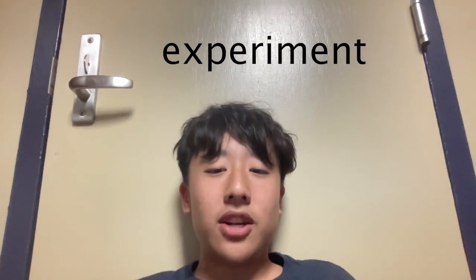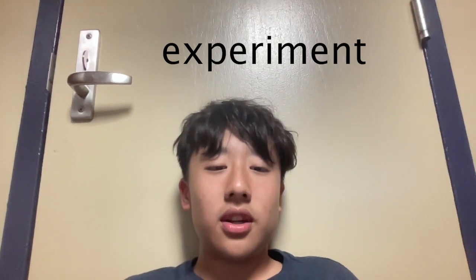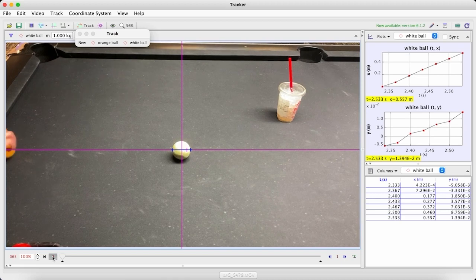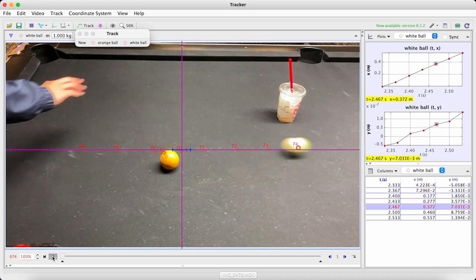In the experiment, the system was the two balls and the table while the surroundings was everything else in the universe. To collect the data, I threw a pool regulation standard ball at another pool ball and recorded the collision.